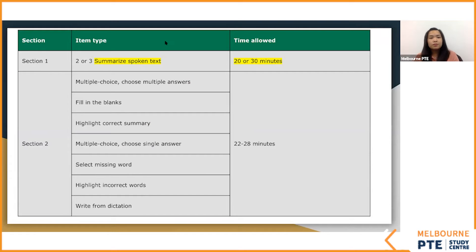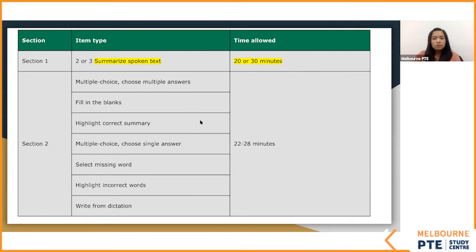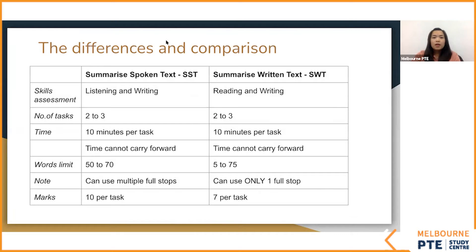Summarize spoken text is in section 1 of your listening. In listening, you have two sections. And in your PTE, you have two summaries. One is summarize spoken text and the other one is summarize written text.